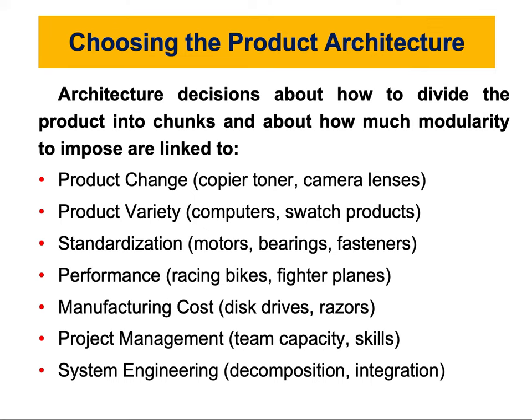The second factor is product variety, which refers to the range of product models a firm can produce within a particular time period, depending on demand. The more variety you need, the more complexity is added to manufacturing. You need to understand that allowing variety in your products affects manufacturing and influences how modular or integral your product architecture should be.